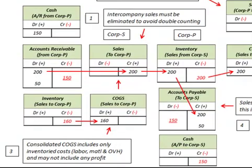Here we're going to be looking at intercompany or affiliated companies merchandise sales and the accounting for consolidated financial statements when we have these intercompany sales. So what do we mean here? We would have, say for example, a subsidiary company and a parent company, and we have sales between the two.